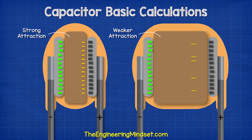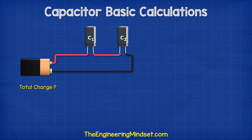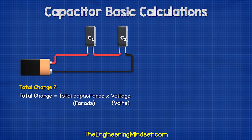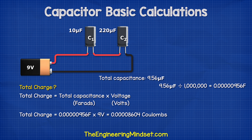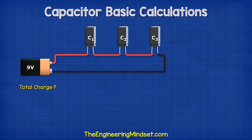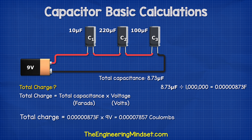So the attraction of the negatively charged electrons to the positively charged holes on the opposite side will become weaker. The total charge of the series capacitors is found using the formula: charge equals capacitance in farads multiplied by the voltage. With a 9 volt battery, we convert the microfarads to farads and see the total charge equals 0.000008604 coulombs. The total charge for the three series capacitor circuit is therefore 0.000007857 coulombs.